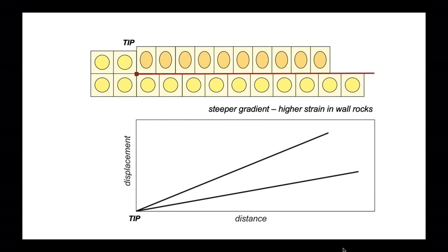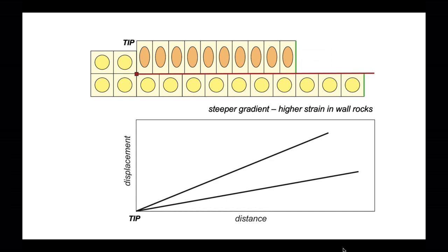Let's just remind ourselves of it. The gradient of the line on our displacement distance diagram relates to the strain that is able to be accommodated in the hanging wall to the fault. The higher the strain, the steeper the gradient.